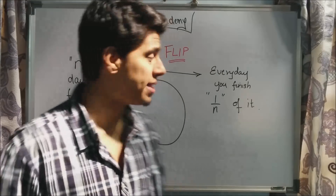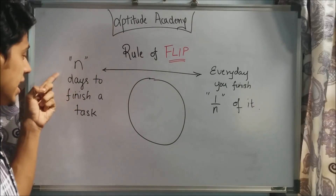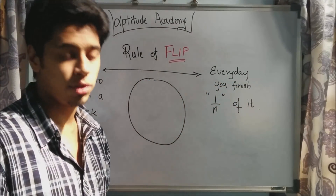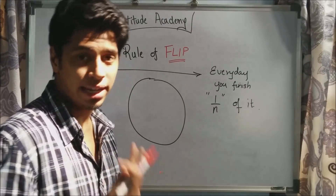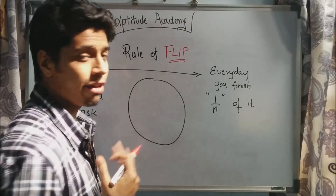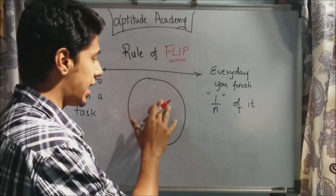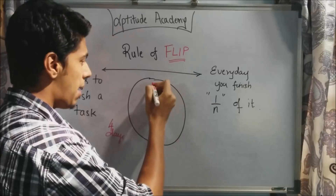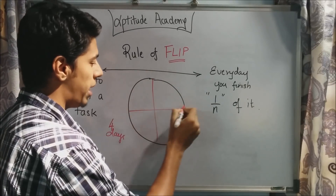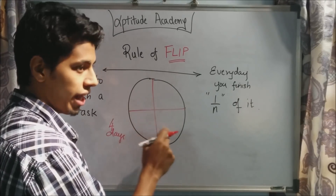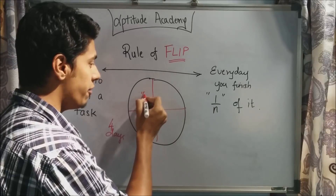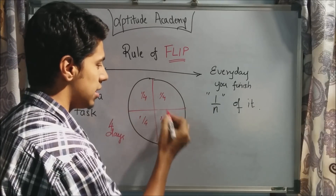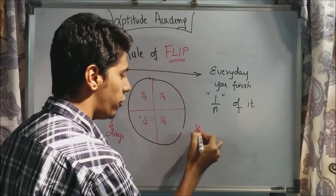The rule of flip basically says that if you take n days to finish a task, then every day you will finish one by n of it. To explain this, consider I am eating a cake. Suppose I take four days to finish the entire cake, assuming I'm eating it uniformly every day. That means I'm eating one fourth of it every day — if I need to finish it in four days, every day I'm eating one fourth of the cake.